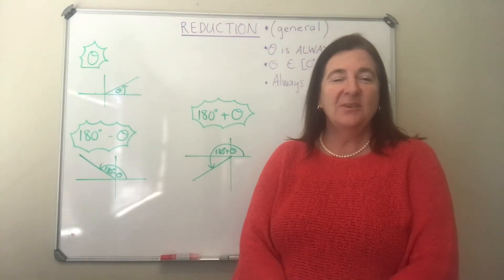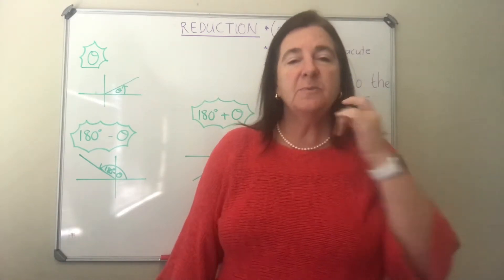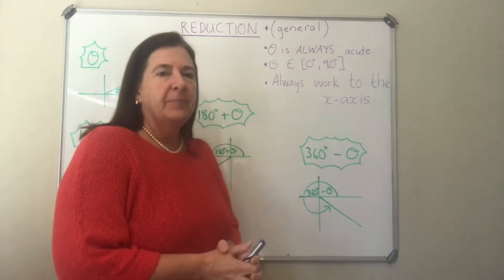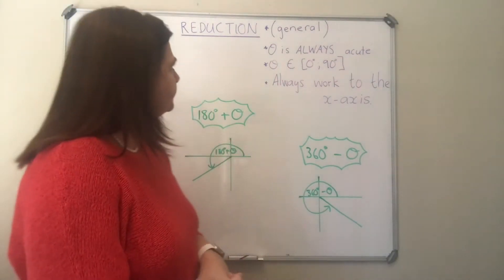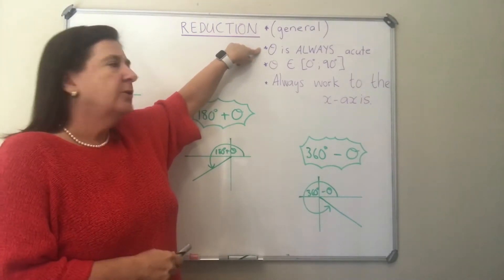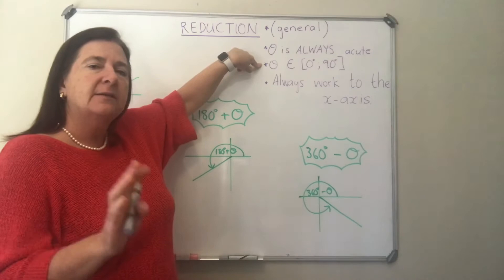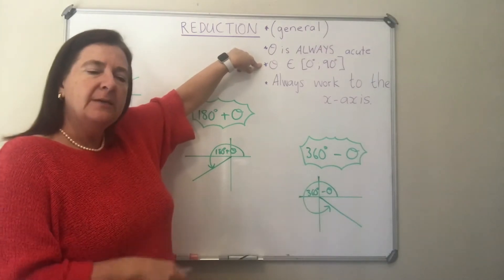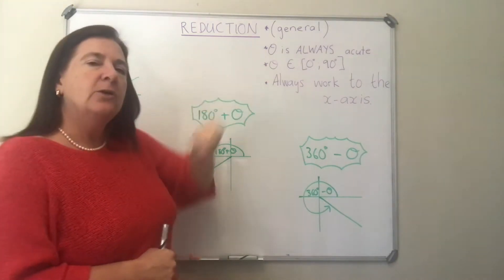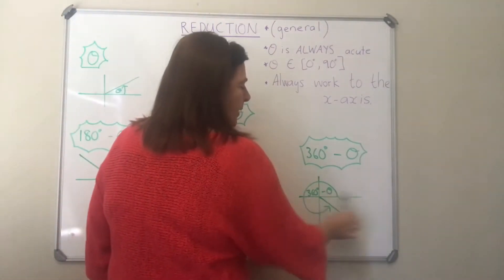I'm going to continue with reduction in trigonometry, and today it's going to be not with specific numerical angles but in general, so we're going to reduce angles bigger than 180. A few things that are crucial to remember: the first thing is that theta is always an acute angle between 0 and 90 degrees — it could sometimes be beta, a, b, or delta, whatever the variable is. Secondly, you always work back to the x-axis, back to the 0–180 degree line.